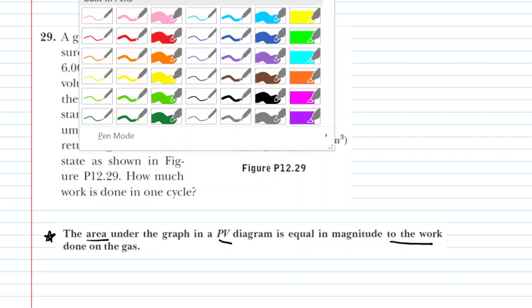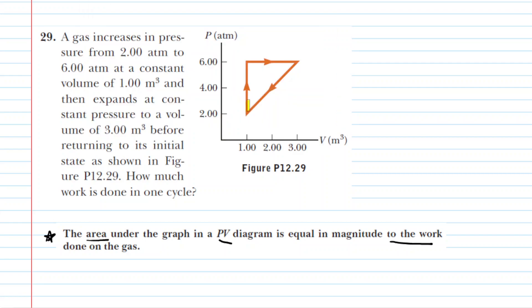So basically what that means is we're going to divide the process into three parts. We'll have this part here, we'll have this part here, and then this third part here. We'll calculate the work for all three parts by determining the area under the graph, and then simply add all those values together to get the total work done.